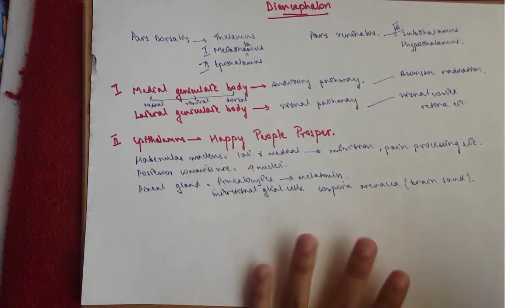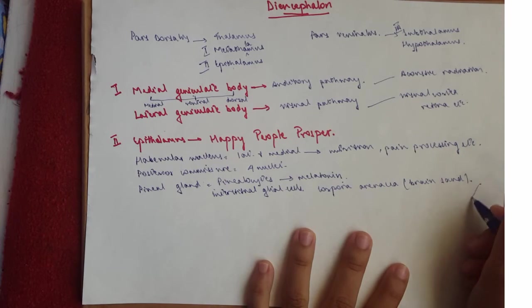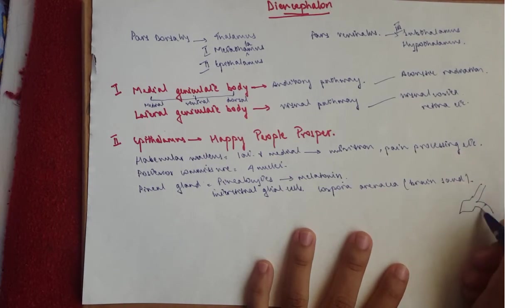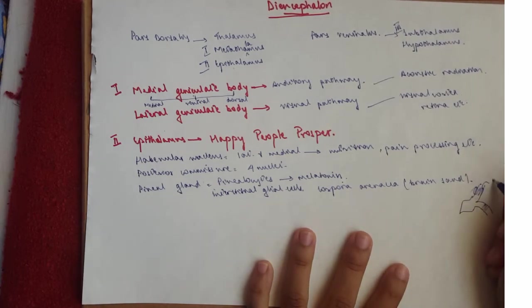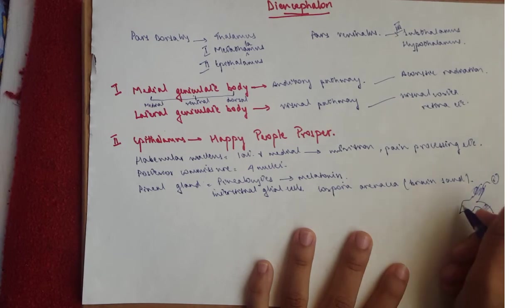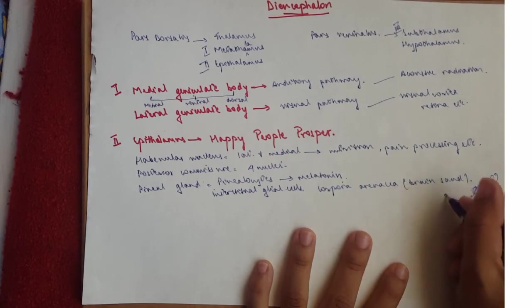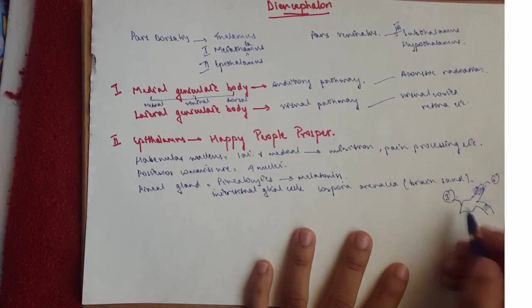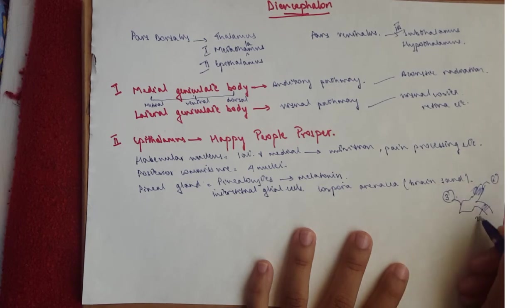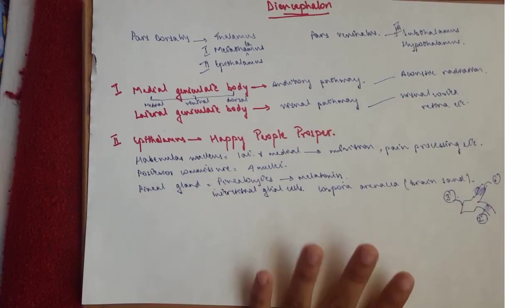That is it for the epithalamus. So you need to know that would be our number one, the habenular nucleus or Happy. That's our number three, which is Prosper and pineal gland. And that would be our number two, which is People and posterior commissure.